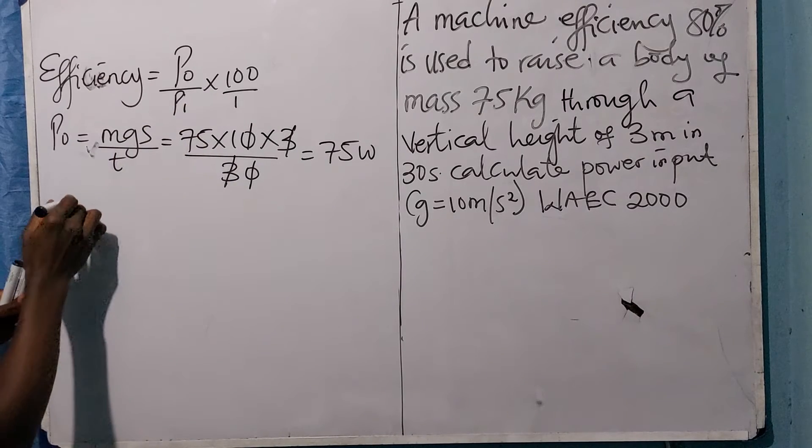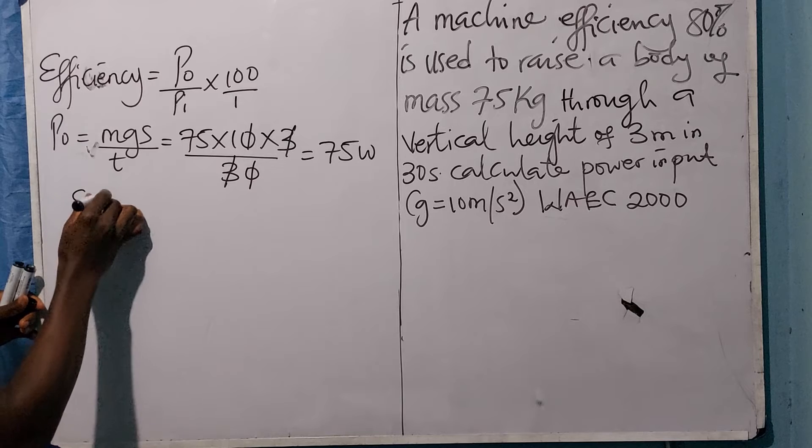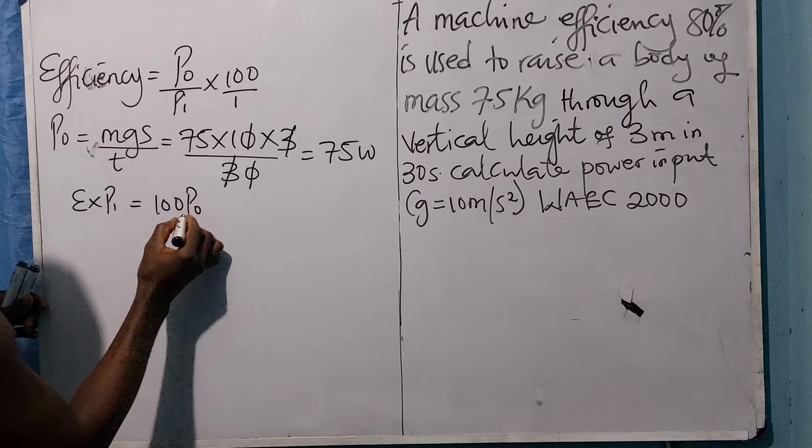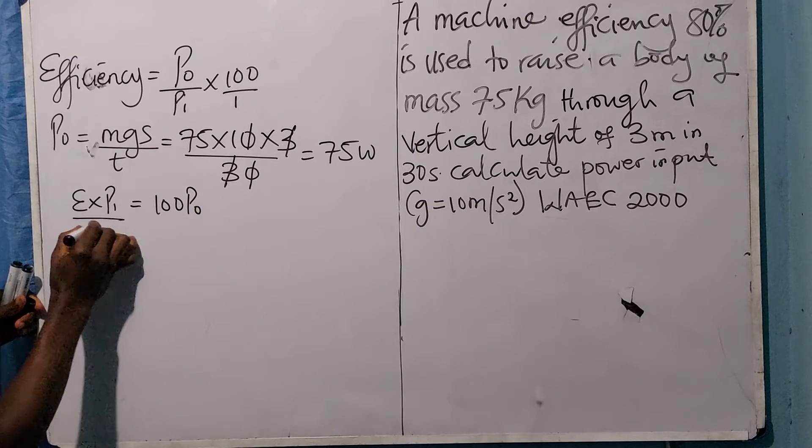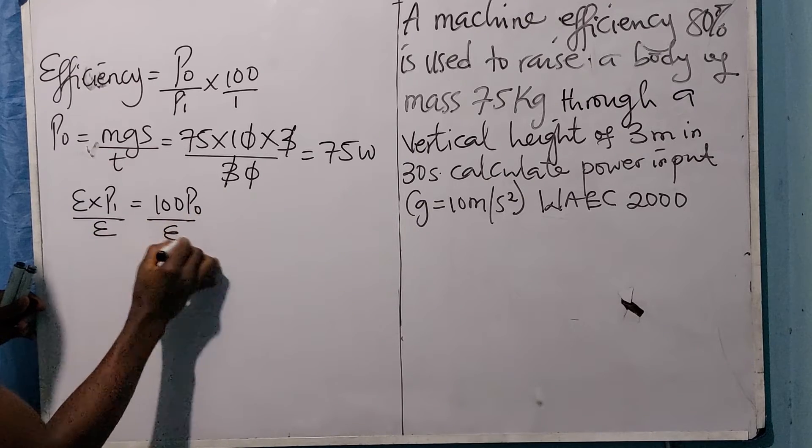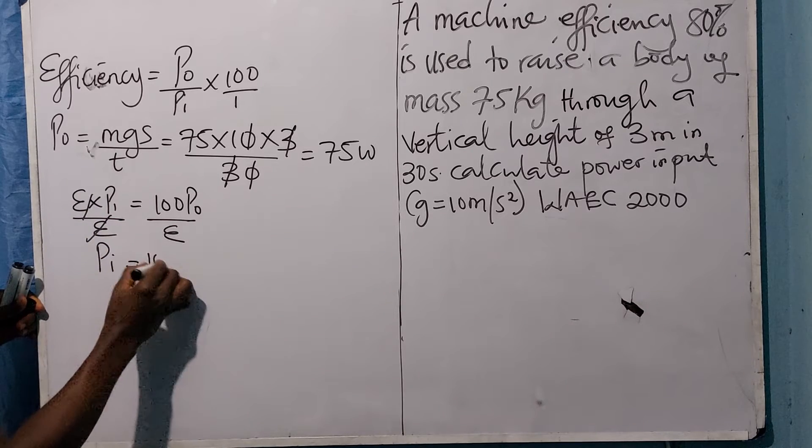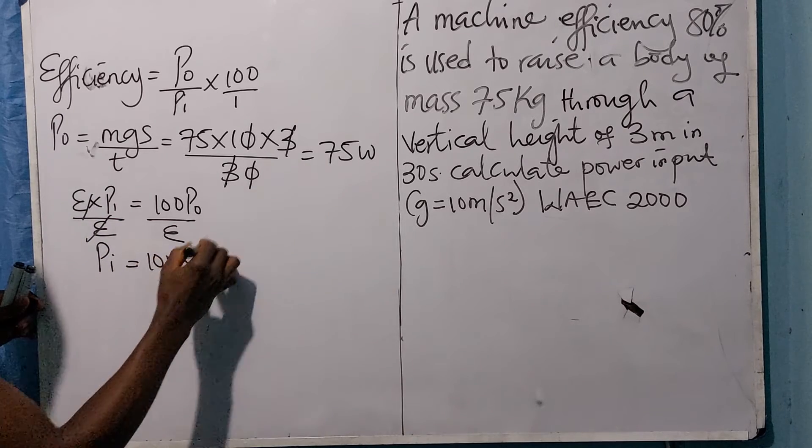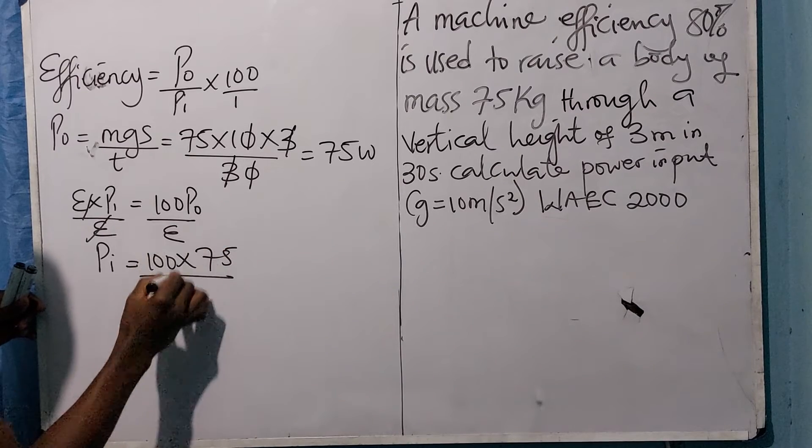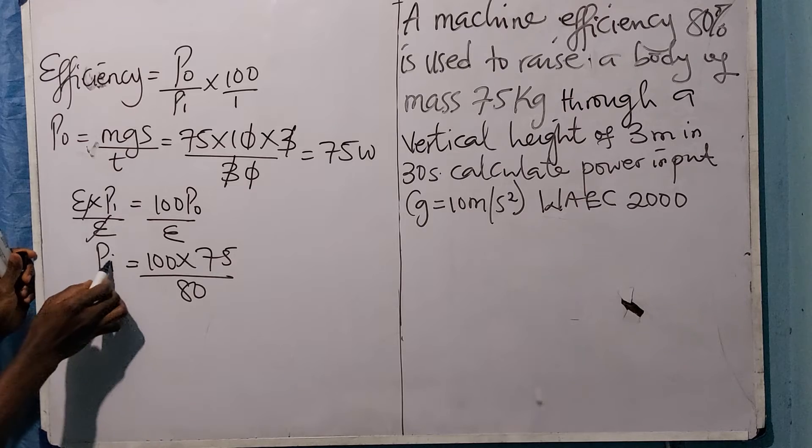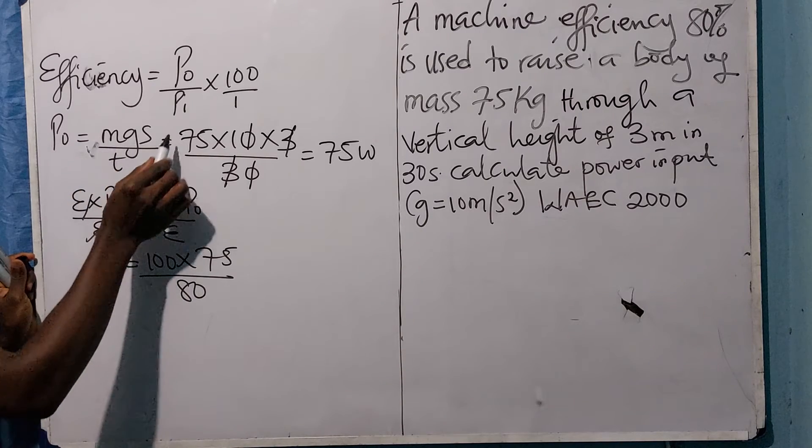Divide both sides by efficiency. Power input equals 100 times power output over efficiency, which is 80. So power input equals 100 times 75 over 80.